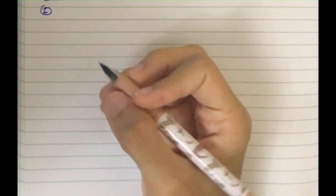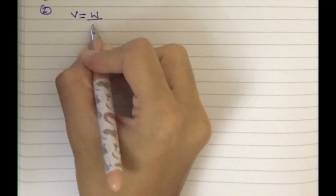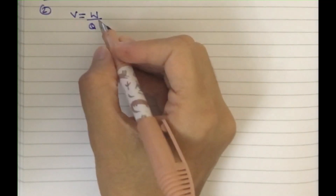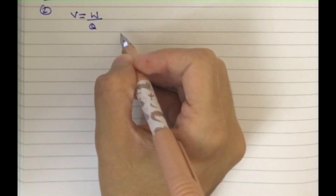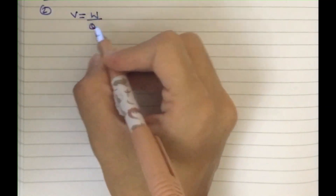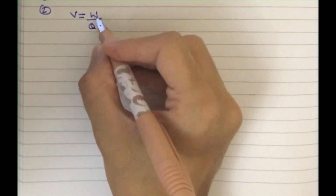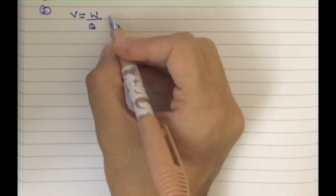This is the second method for the same question. We are going to use the same formula that we used in the previous method, just we are going to do it directly without taking the longer steps. We have this formula: V is equal to W divided by Q, and we need to find out the work done.